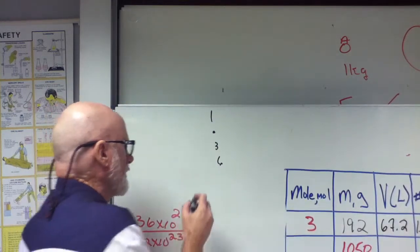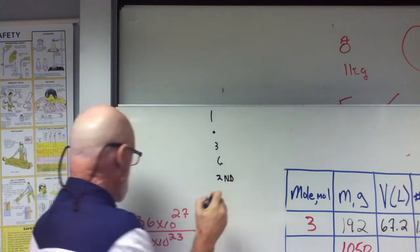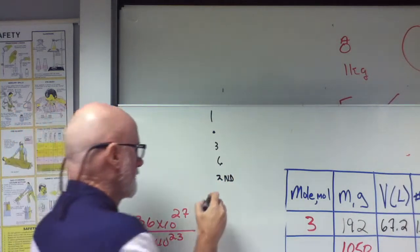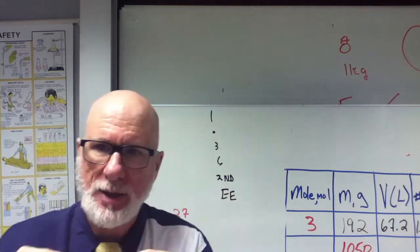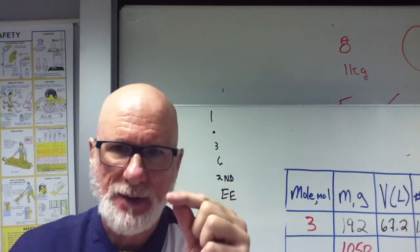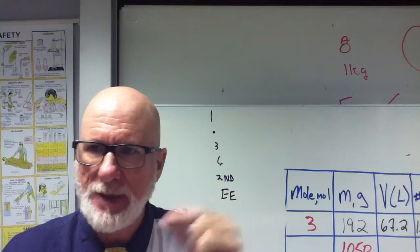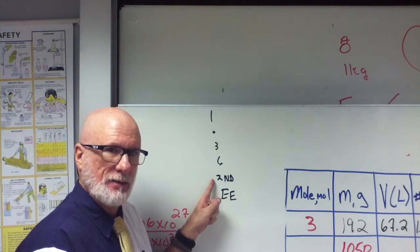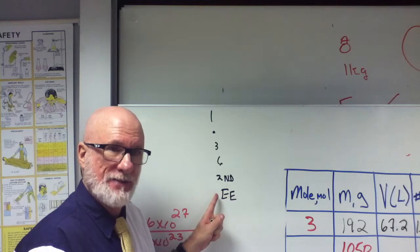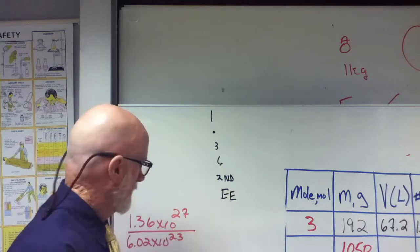And then find second EE. Now, the EE is going to be above a number or some kind of letter. It may be in gold, it may be in blue depending on the color of the second button. Has everybody found it?